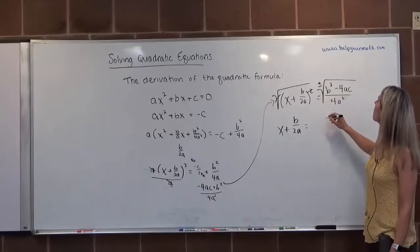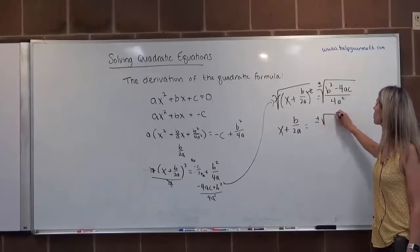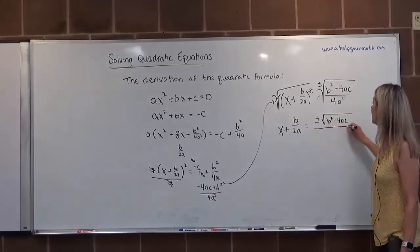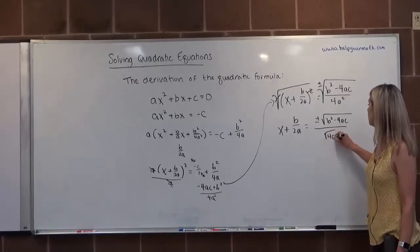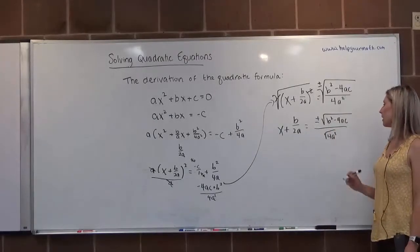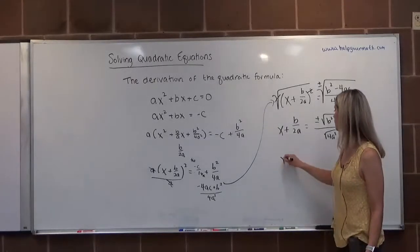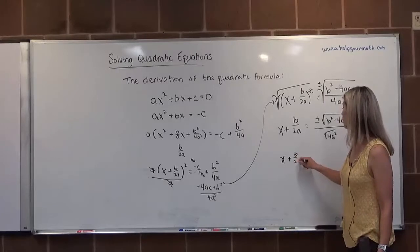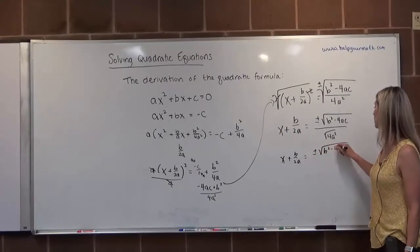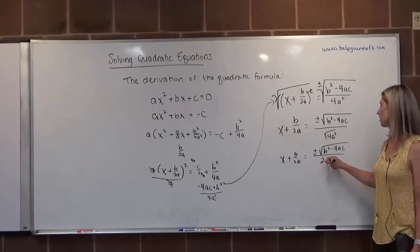what we can do here is put the plus or minus square root of b squared minus 4ac in the numerator, and then have a separate radical in the denominator. The denominator actually is a perfect square, so we can actually rewrite that. b over 2a equals plus or minus the square root of b squared minus 4ac. And if I take the square root of 4a squared, it's 2a.